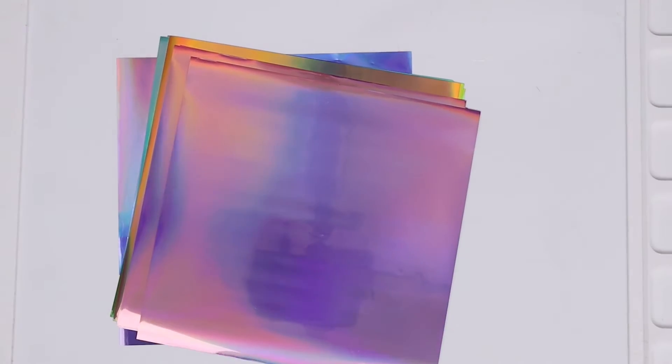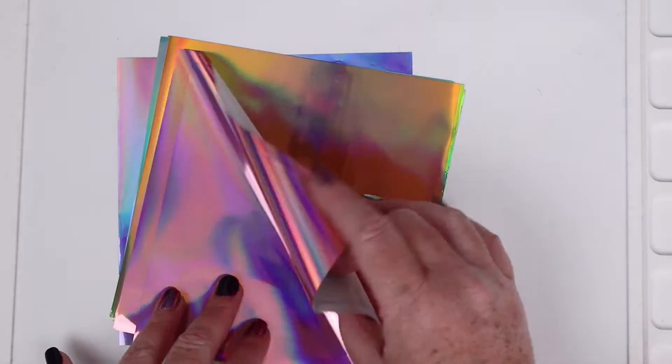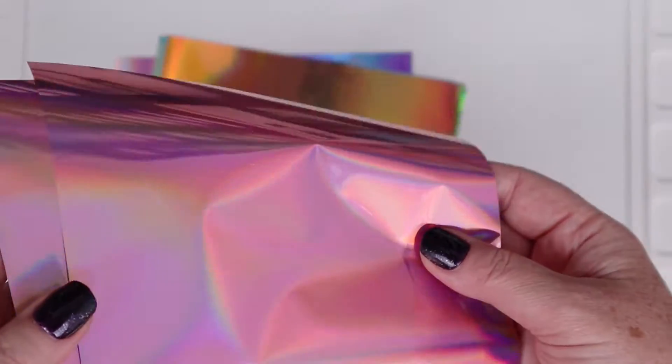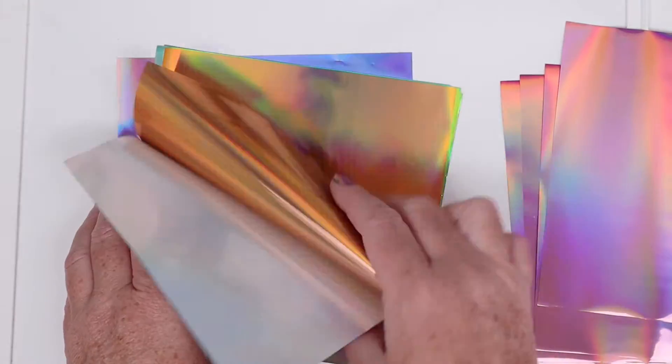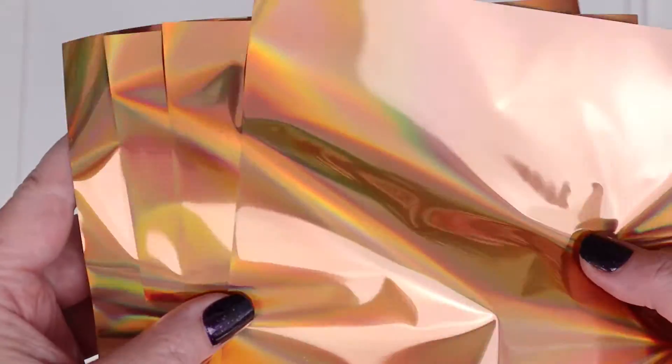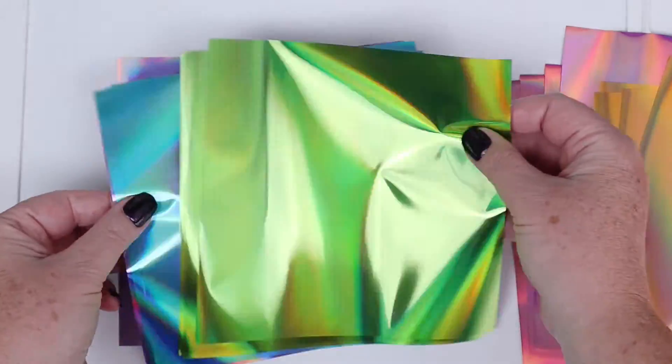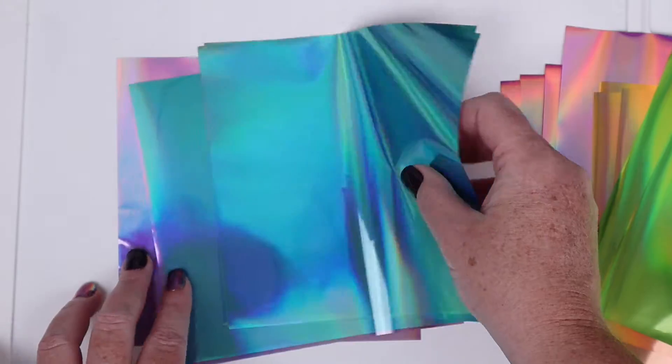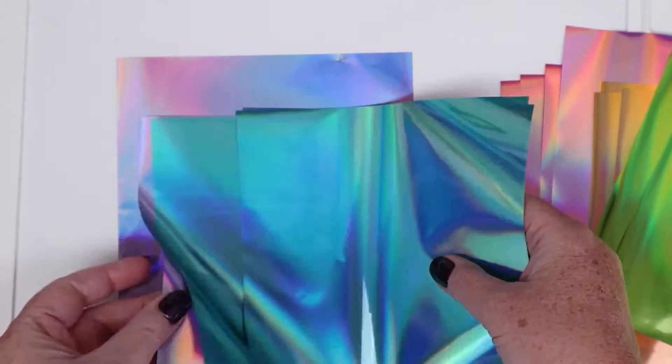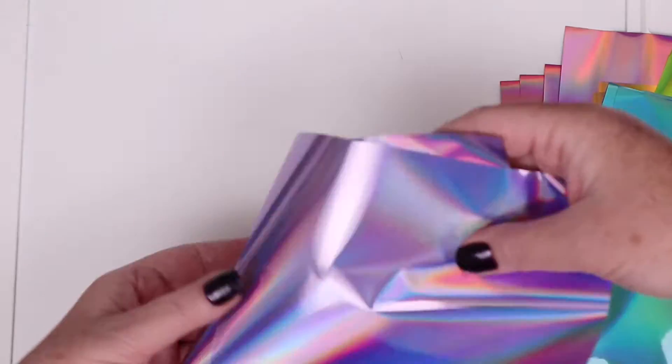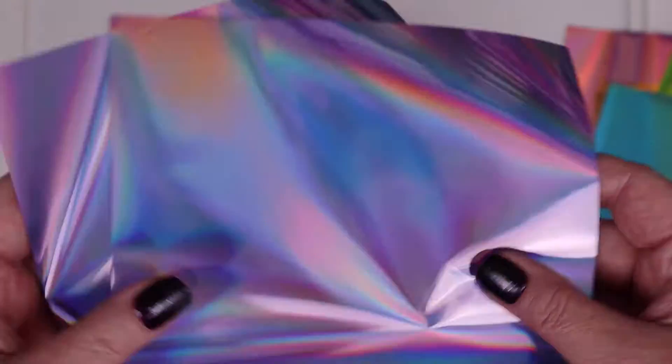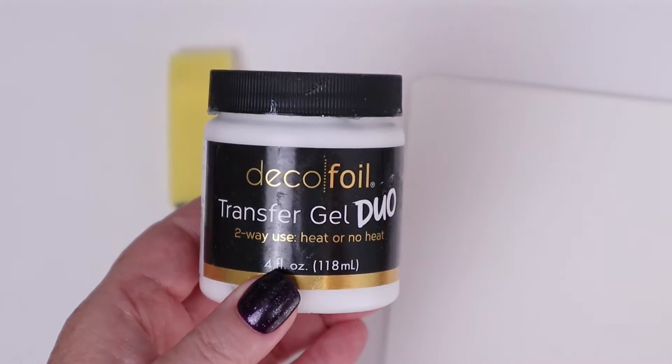These are the Fairy Tales Deco Foils. This pink one is called Enchanted Rose, then we have Peach Princess, the green one is called Lily Pad, then there's Glass Slipper, and finally we have Prince Periwinkle. Such cute names, I love these new colors.